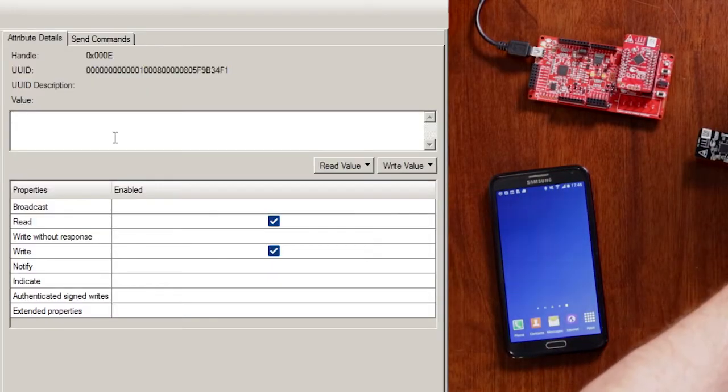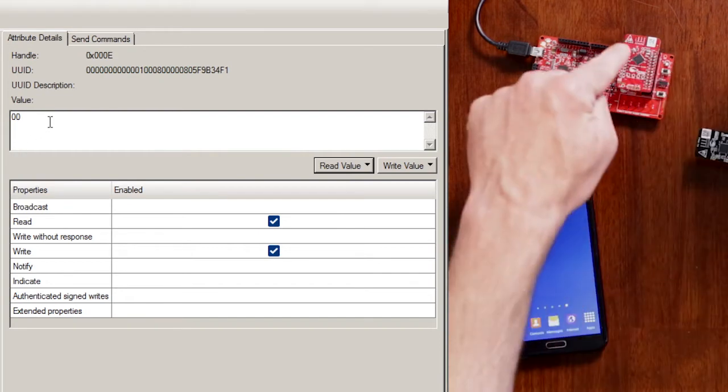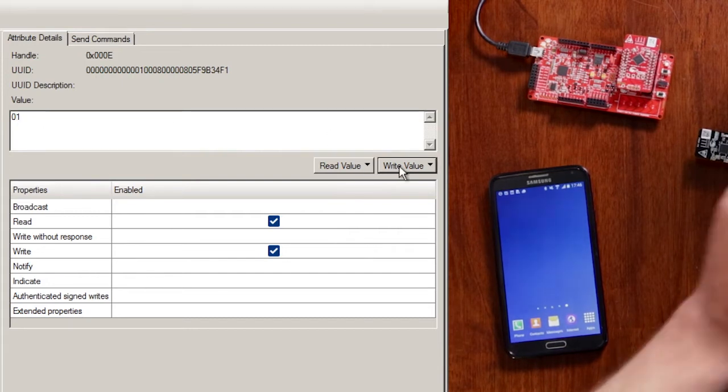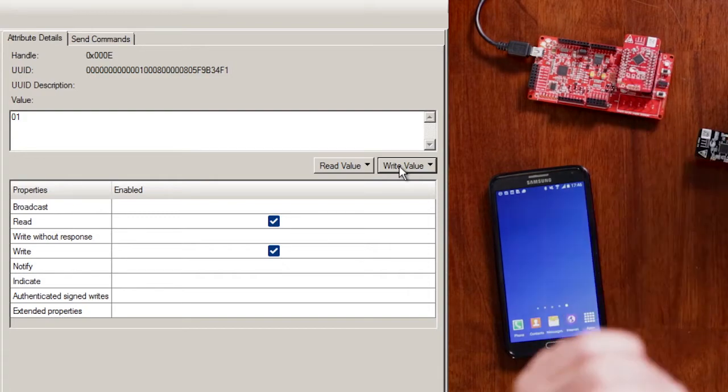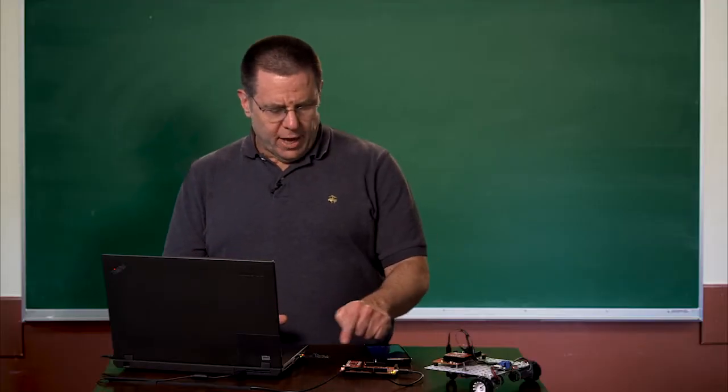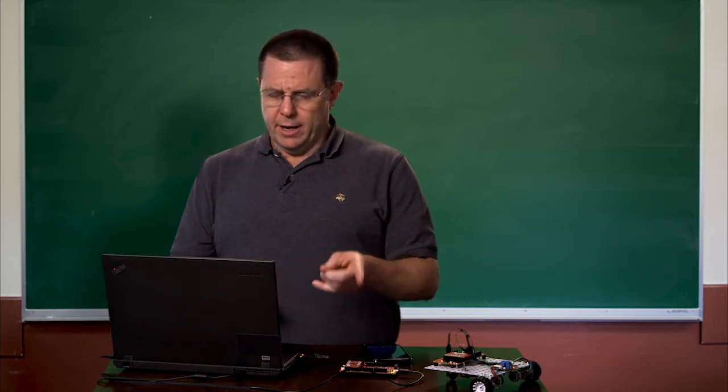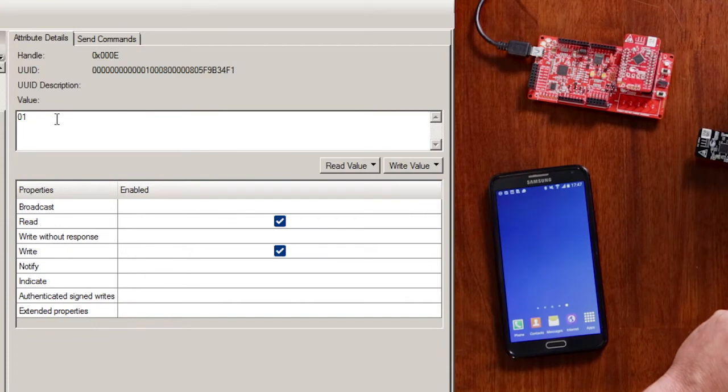I'm going to try the LED. First, I can click the read value button and I can see that it's currently zero, which we know is off. See, the light is off. So I'll do a write value and I will write a one, click write value. The LED turns on. That's cool. Okay, so the CapSense works. The CCCD works. I can read and write the LED. All that's good.